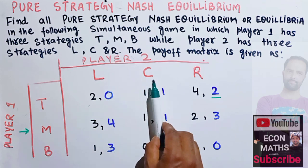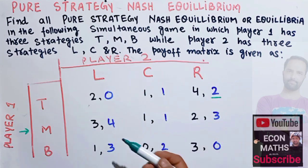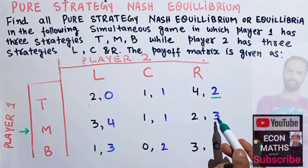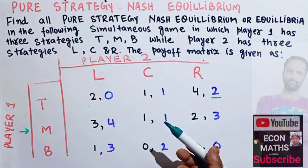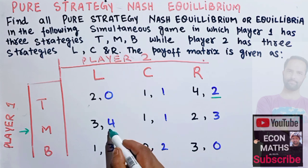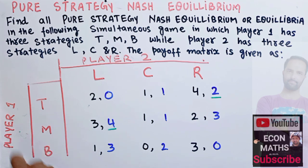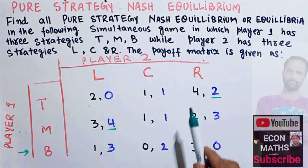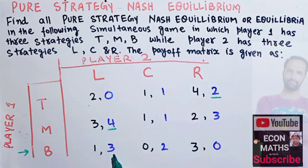We look at which of the blue numbers is the biggest when Player 1 chooses M, and underline that. Now suppose Player 1 chooses B. Player 2 has three options: L gives 3, C gives 2, and R gives 0. Player 2 will choose the biggest payoff, which is 3 from L, so we underline that.